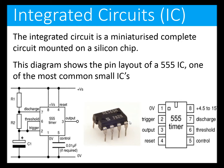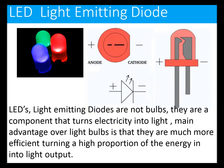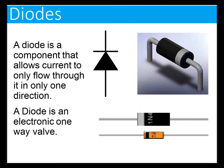The integrated circuit is a miniaturized complete circuit mounted on a silicon chip. This diagram shows the pin layout of a 555 integrated circuit, one of the most common ICs. Light emitting diodes — LEDs — are not bulbs; they're a component that turns electricity directly into light. The main advantage over light bulbs is they're much more efficient, converting a higher proportion of energy into light rather than heat. The diode allows current to flow in only one direction — it's basically an electronic one-way valve.